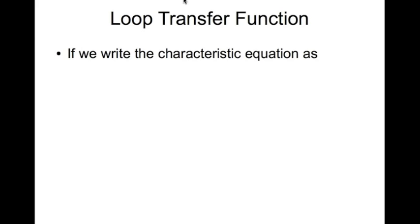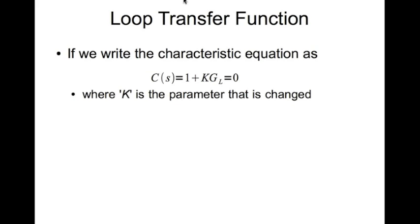Now we'll look at the concept of a loop transfer function. If we write a characteristic equation in the form C of s equal to 1 plus k times g_L equal to 0, where k is the parameter that we are going to change, g_L is the loop transfer function.